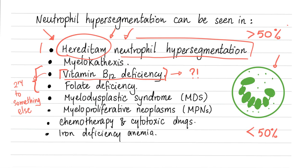Elevated homocysteine — homocysteinemia — is bad. It can increase your risk of strokes, intellectual disability, joint contracture, lens subluxation, and so on. Another ugly inherited disease is myelocathexis: it's inherited, has neutropenia, and there is bone marrow hyperplasia of myeloid origin. Next, we have myelodysplastic syndrome, which is discussed in detail in the hematology playlist.